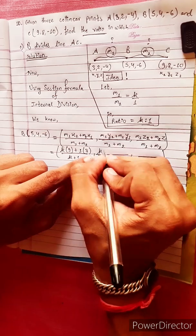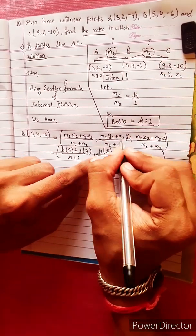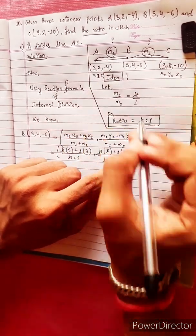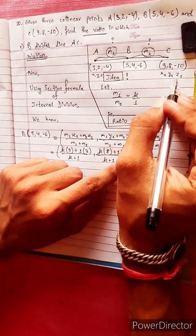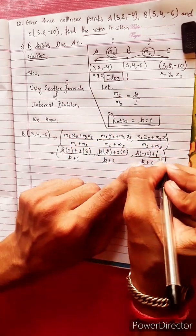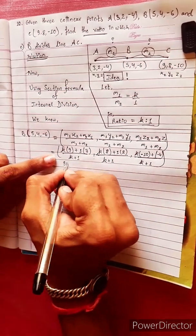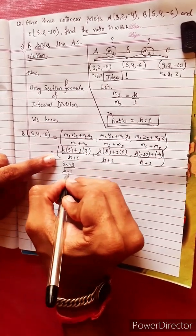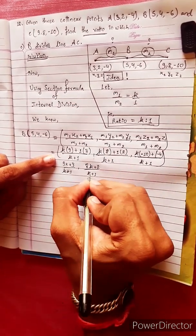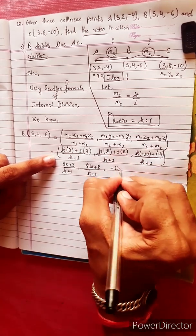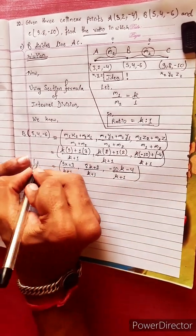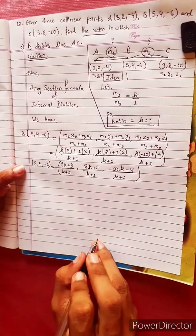Similarly, M1 equals k for y-coordinate: Y2 equals 8, M2 equals 1, Y1 equals 2, giving (8k + 2) divided by (k + 1). For z-coordinate: Z2 equals -10, M2 equals 1, Z1 equals -4, giving (-10k - 4) divided by (k + 1). These equal (5, 4, -6) respectively.